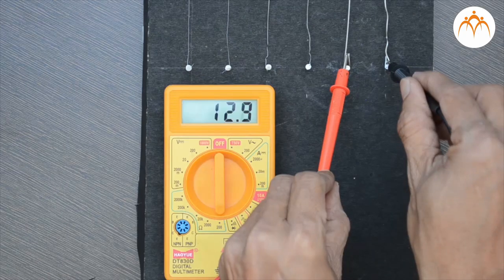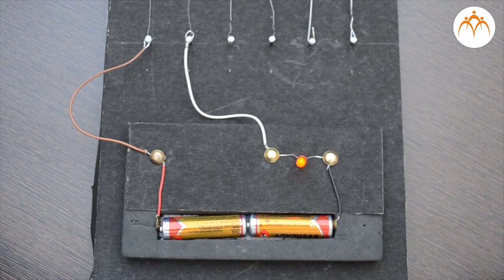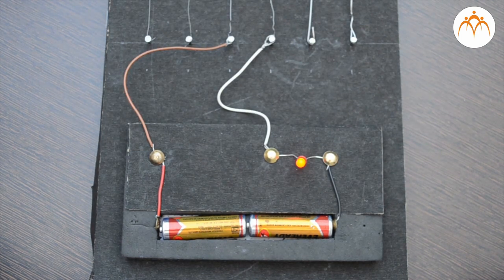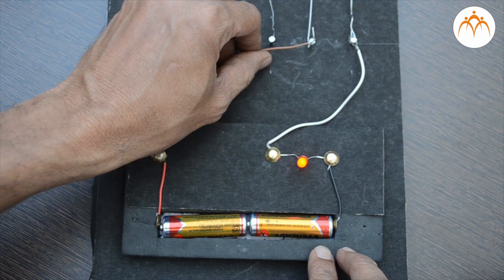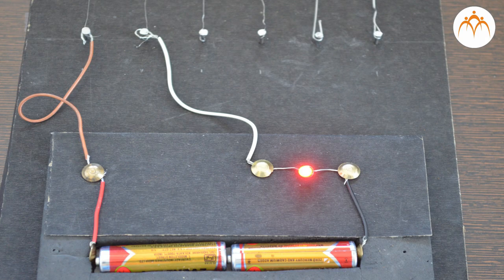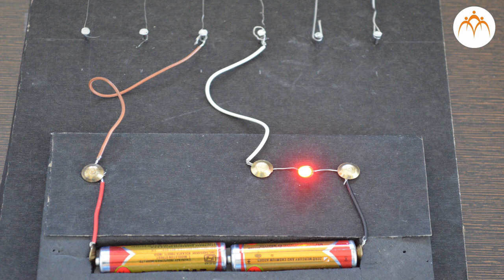If each wire is connected in series, intensity changes of the LED light can be observed as different types of wires are connected to the circuit. LED light is brighter with thicker wire and dimmer with thinner wire.